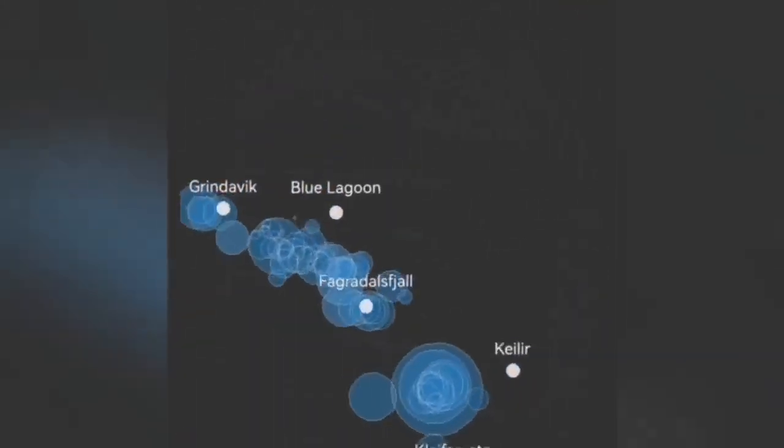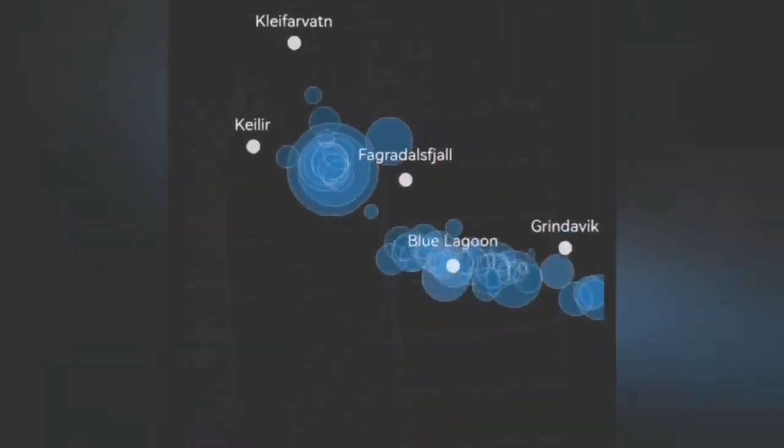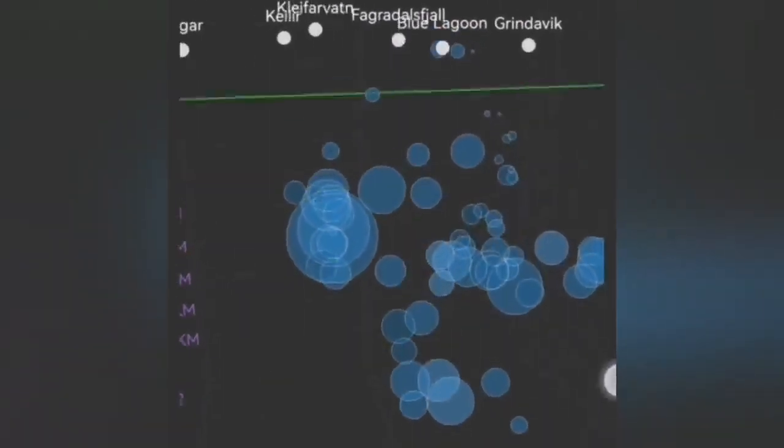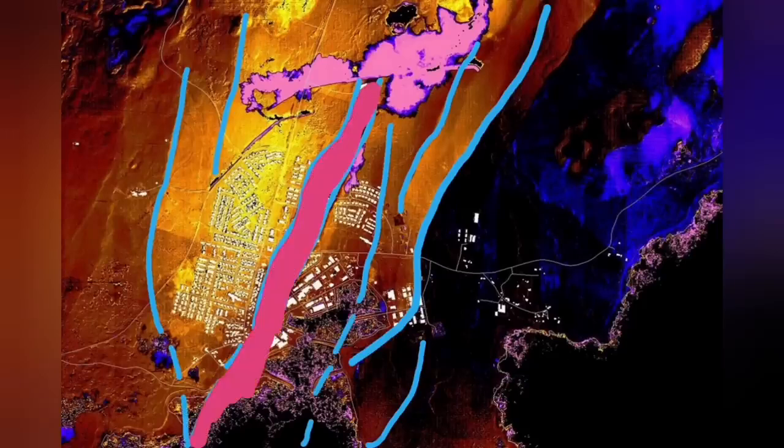Before that, we had activity to the north of Grindavík, in Hagafell and Sundhnúkar, where we had eruptions. In November we had the earthquake, then December eruption, and January eruption again.